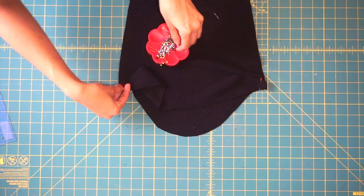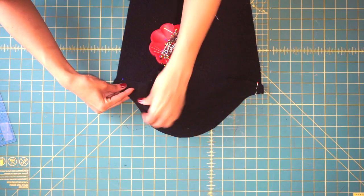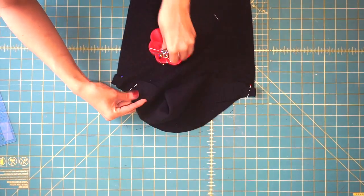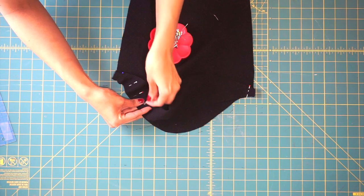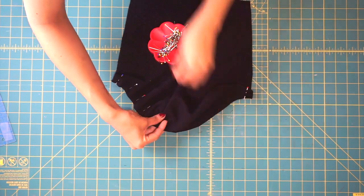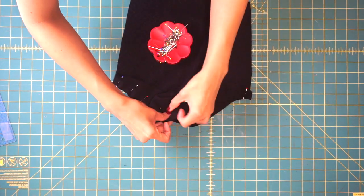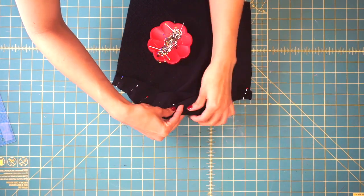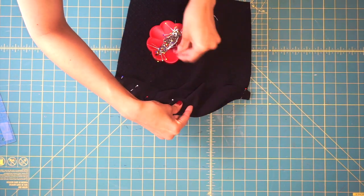Once you've hemmed the curved edge of your sleeve hack, pin the straight edge of the sleeve hack to the curved edge of the sleeve, just like you see me doing here. The right side of both pattern pieces are facing up, so the wrong side of the sleeve hack is facing the right side of the sleeve.